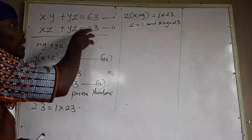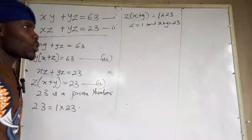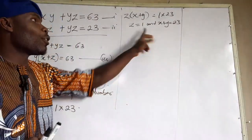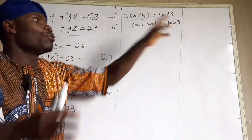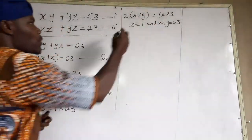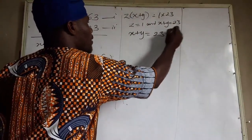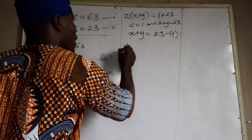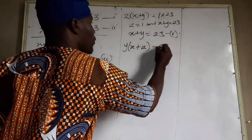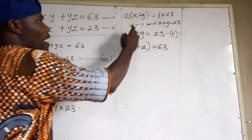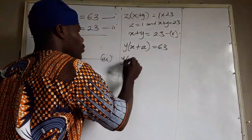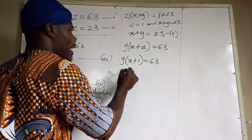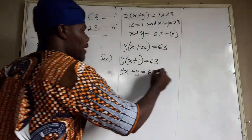Because x, y, z are real numbers, x plus y cannot equal 1 — that would force z to be 23 with x plus y equal to 1, which doesn't work. So z equals 1. Now from equation three, y(x plus z) equals 63, and since z equals 1, we get y(x plus 1) equals 63.